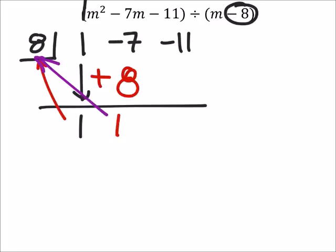And now I do 1 times the 8, which is 8. And negative 11 plus 8 would be negative 3. And that would be our remainder right there.